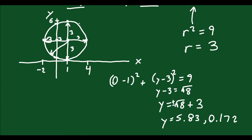This is useful if you need to graph on grid paper and want your y-intercepts to be accurate, or if you're asked to solve for them. You can do the same with the x-intercept — set y to 0 and solve for x. For this circle it's fairly obvious, since it touches at x equals 1, but the same process applies.